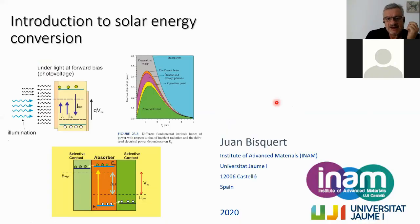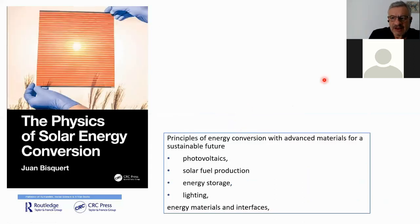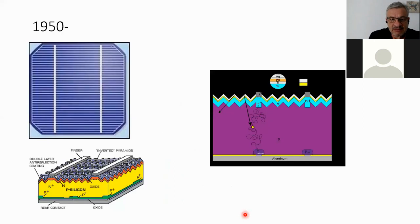Today I will start with a general introduction to solar energy conversion. This is the contents of my new book that has just been published, The Physics of Solar Energy Conversion by CRC Press. In the book we have described the principles of several fields related to clean energy production and advanced materials like photovoltaics, solar fuel production, energy storage in batteries, and lighting. This is a book about energy materials and interfaces for making devices and understanding the principles. I want to explain how this book began.